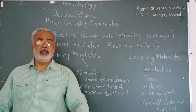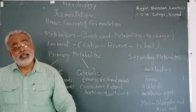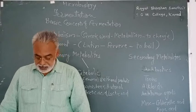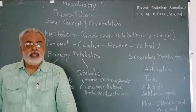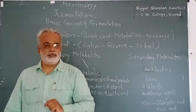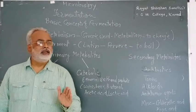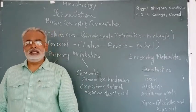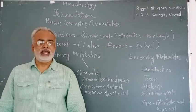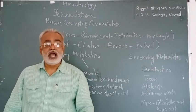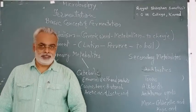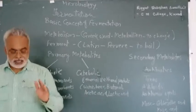In metabolism, two types of reactions take place with the help of various enzymes present or produced by the microorganism: one is called the catabolic reaction and the other is called the anabolic reaction. The process of catabolic reaction is called catabolism, and the process of anabolic reaction is called anabolism.